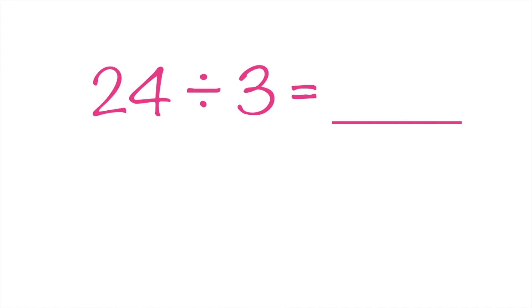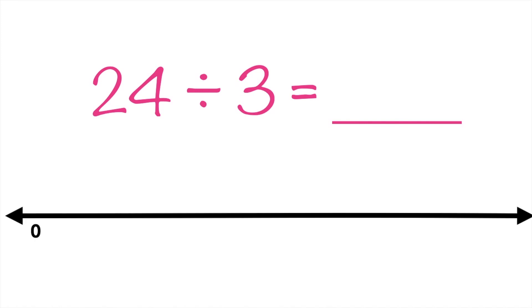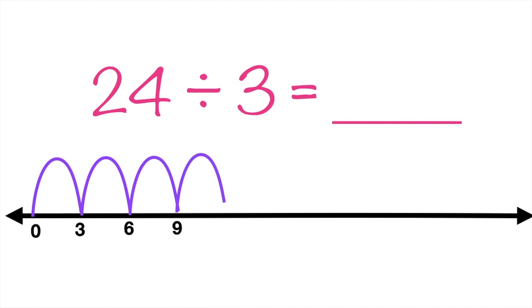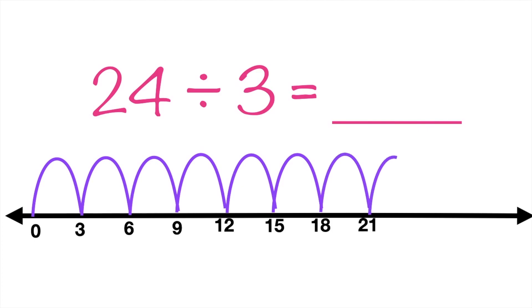Let's have another example. 24 divided by 3 equals blank. Again, children, let's use the number line to find the quotient. Let's start at 0, then we will skip count by 3 until we reach 24. Are you ready? Let's do it together. 3, 6, 9, 12, 15, 18, 21, 24. Since we reached 24, we can now write the quotient. How many jumps do you have? Good job! It's 8. So, that means our quotient is 8. 24 divided by 3 equals 8.